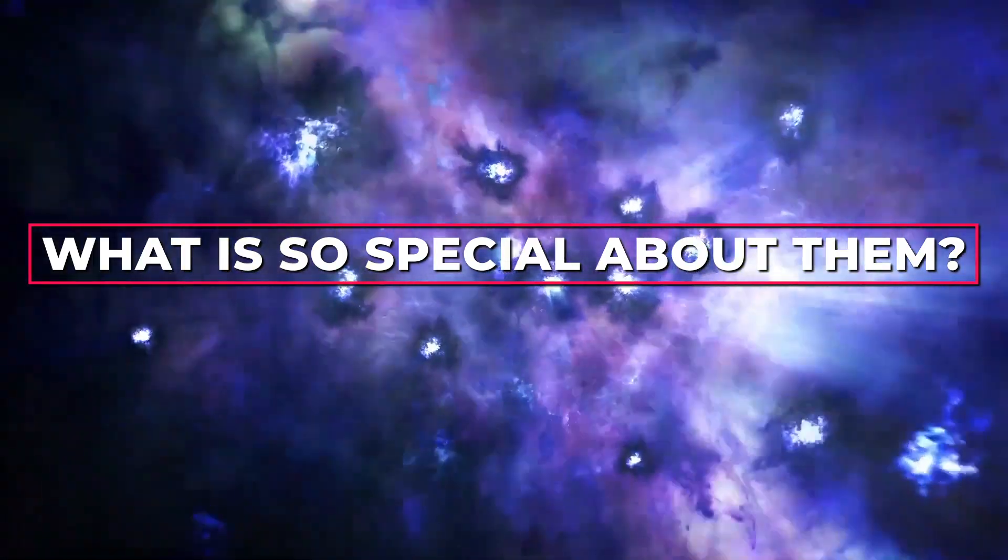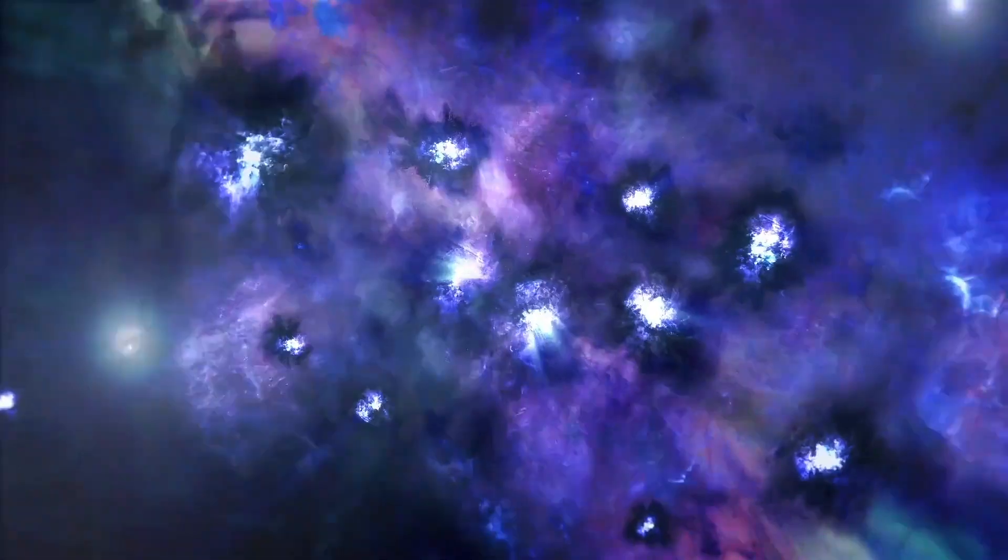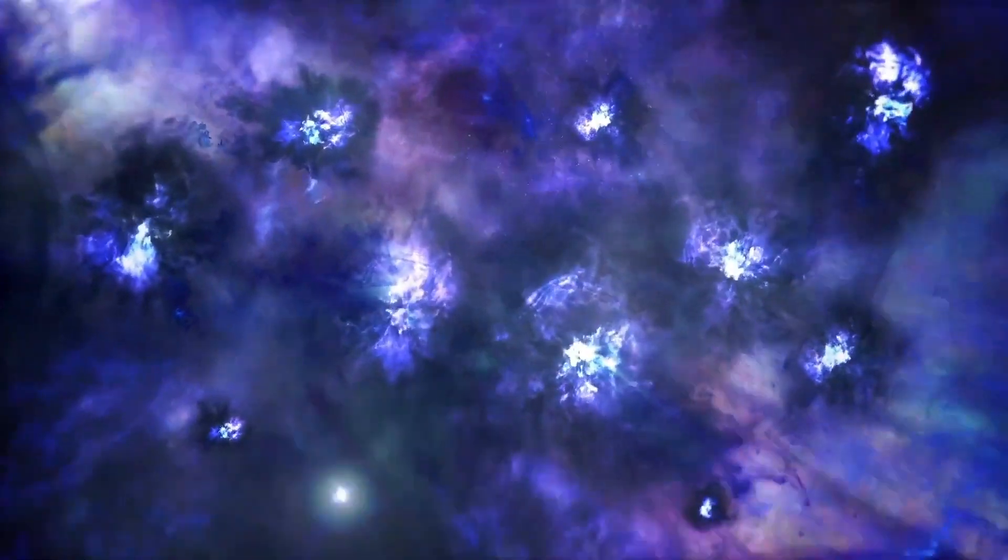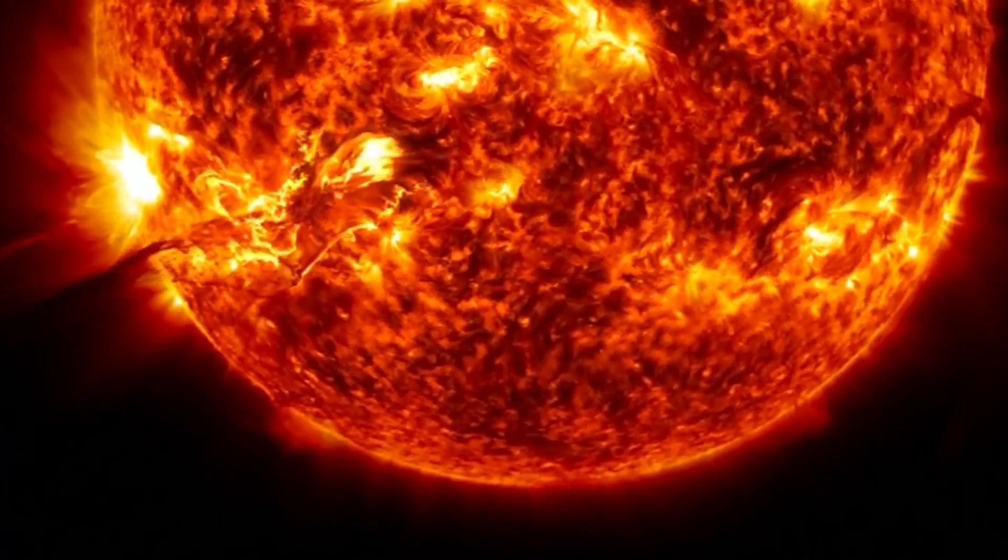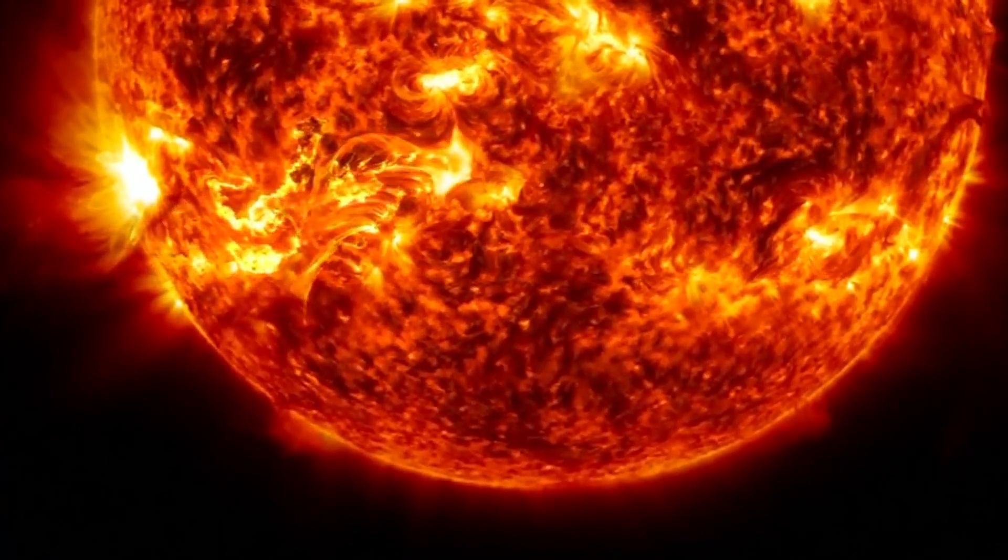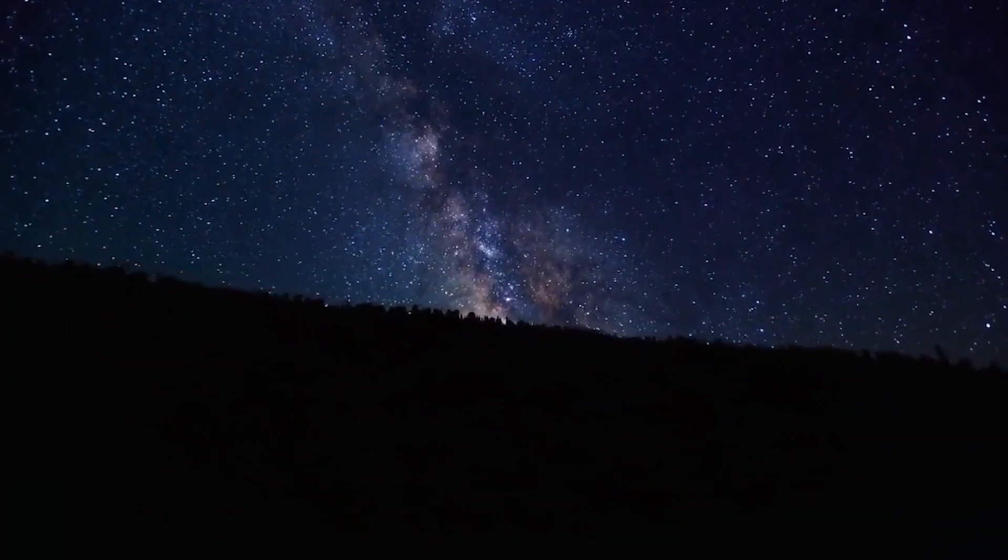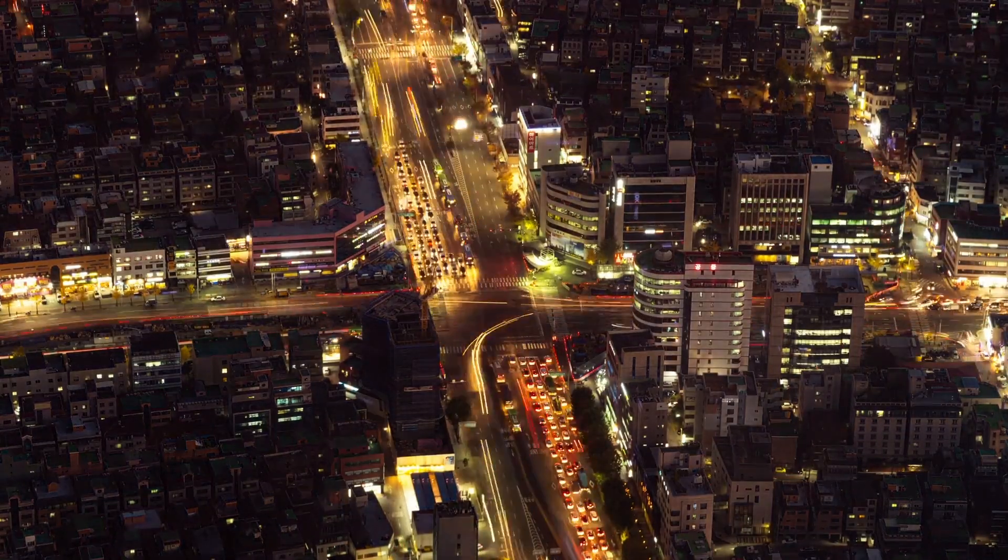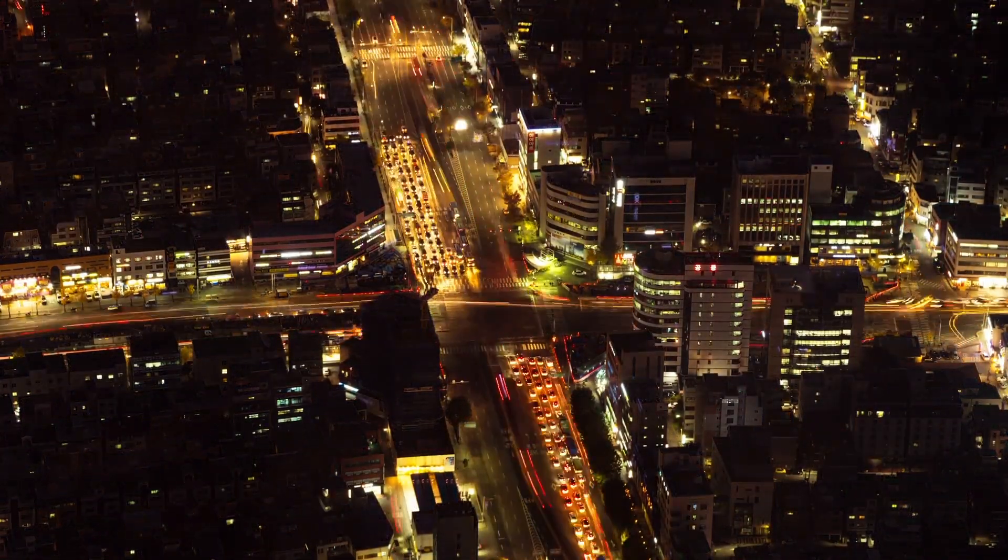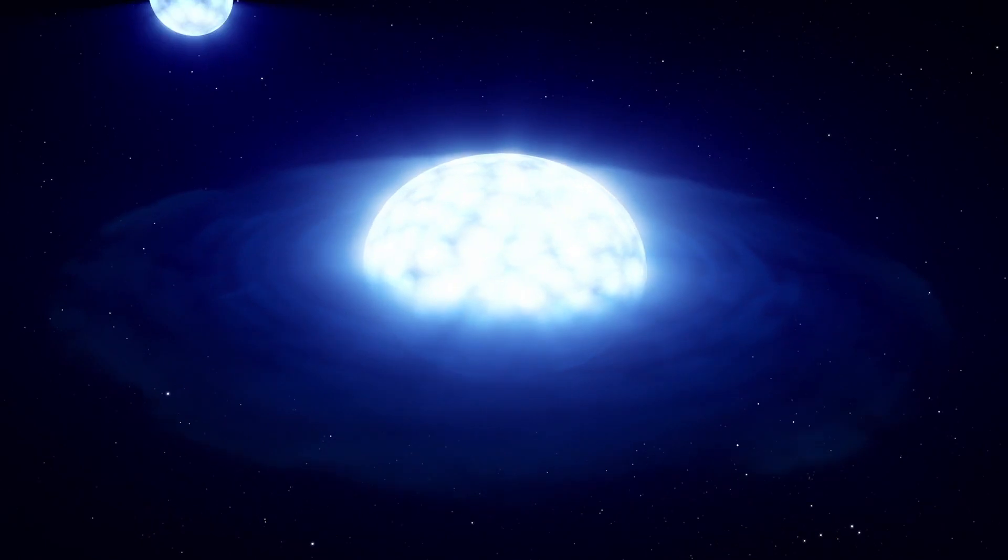But what is so special about them? Well, neutron stars are incredibly dense, so dense that it's almost impossible to wrap our heads around just how compact they are. To put it in perspective, if we were to take the entire mass of our sun and squeeze it down, it would form a neutron star only 10 kilometers in diameter, all that mass packed into a space smaller than most cities on Earth.